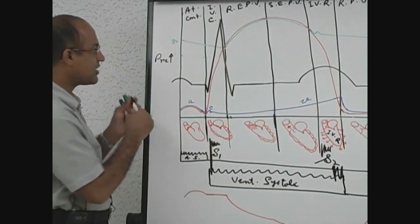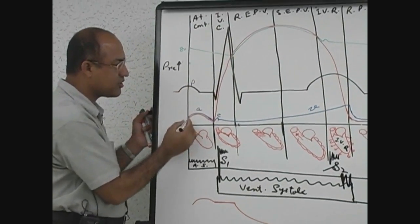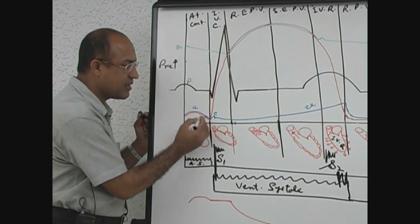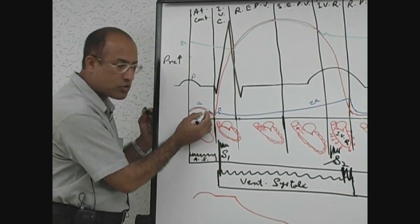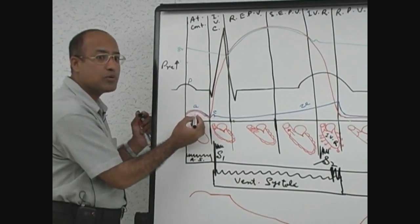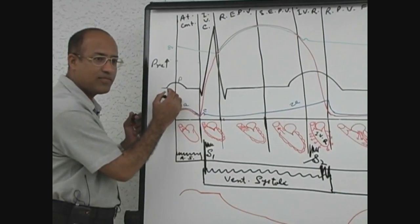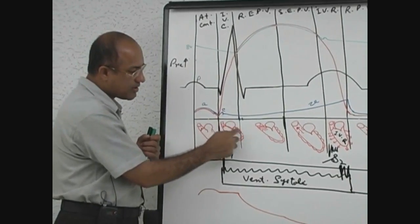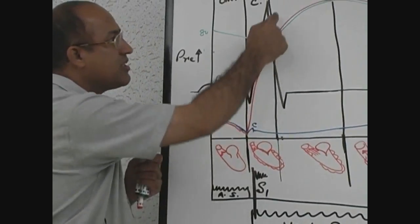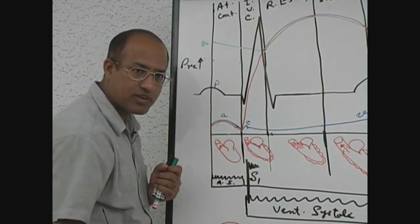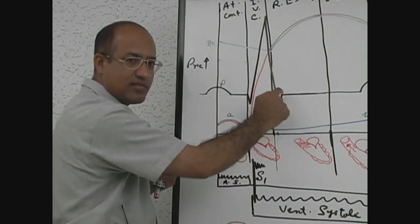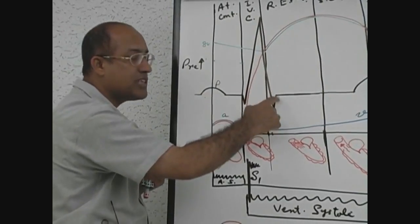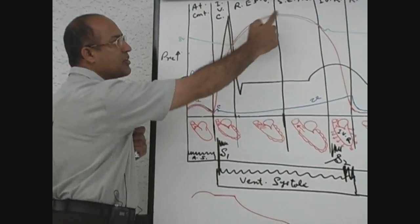The P wave on the ECG represents atrial depolarization and occurs just before the A wave. The A wave on the pressure tracing represents mechanical atrial activity, so atrial electrical activity must precede it. When ventricular pressure rises rapidly, that requires ventricular depolarization — the QRS complex — and once ventricles are depolarized, the mechanical event begins and ventricular pressure goes up.